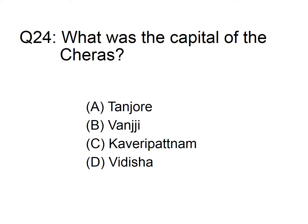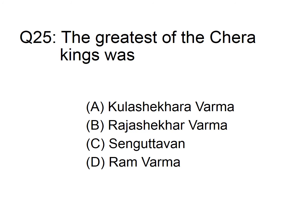What was the capital of the Cheras? Option A: Tanjore, B: Vanji, C: Kaveripatnam, D: Vidisha. The answer is option B, Vanji. It was a Tamil dynasty. The greatest of the Chera kings was option A: Kulashekhara Varma, B: Rajyashekhara Varma, C: Senguttuvan. The answer is option C, Senguttuvan.